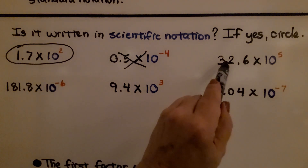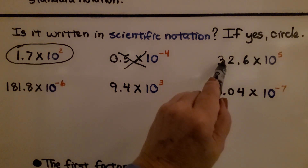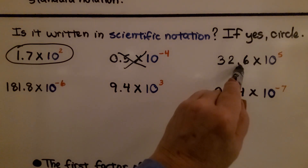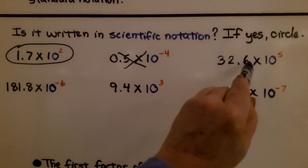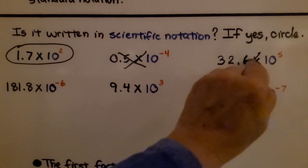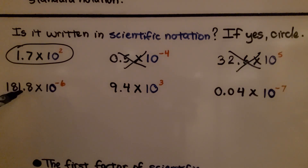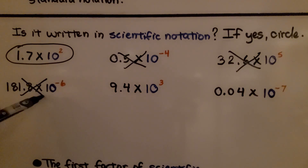Look here — we have a digit, a digit, then a decimal, then a digit. So that's not scientific notation. Here we have three digits and then the decimal point. That's not scientific notation either.